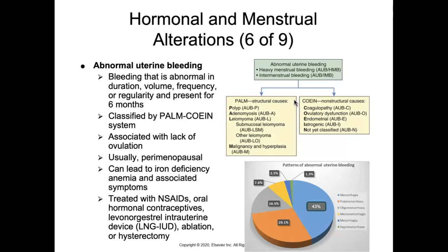Abnormal uterine bleeding can result from defects of the corpus luteum, issues with ovulation, or abnormalities of the uterus or cervix, leading to excessive and irregular endometrial thickness. It is most common in perimenopausal individuals. Dysfunctional bleeding involves flooding and passing large clots — essentially excessive blood loss — which can lead to iron deficiency anemia.